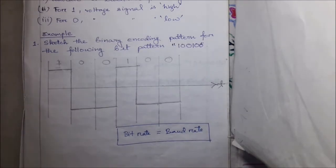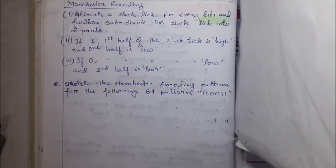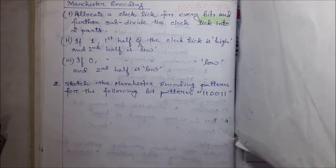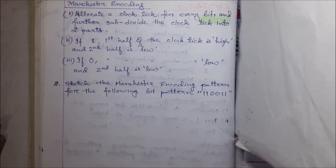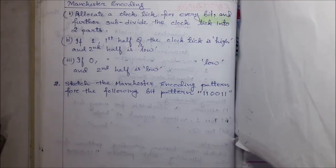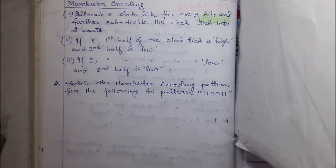Now let us see Manchester encoding. In Manchester encoding, we need to allocate a clock tick for every bit and further subdivide the clock tick into two parts. If the encountered bit is one, the first half of the clock tick starts with high and the second half ends with low. If the encountered bit is zero, the first half starts with low and the second half ends with high.